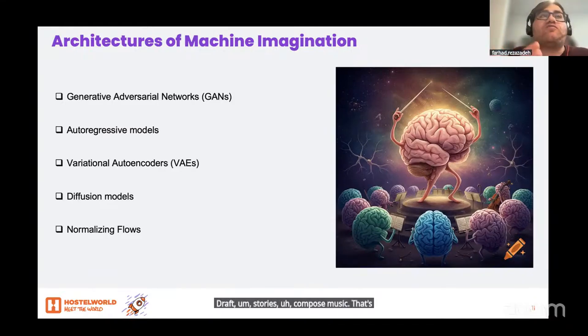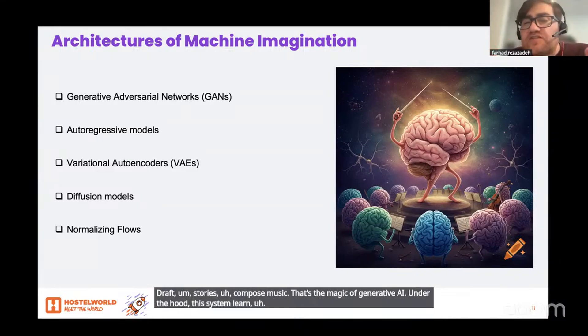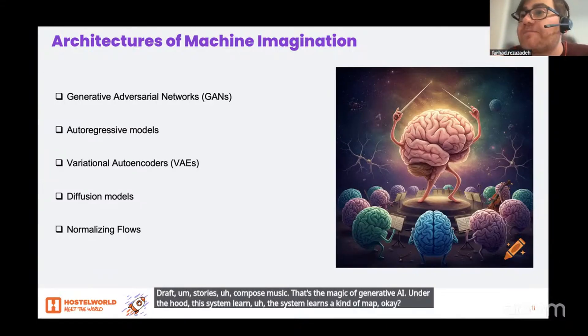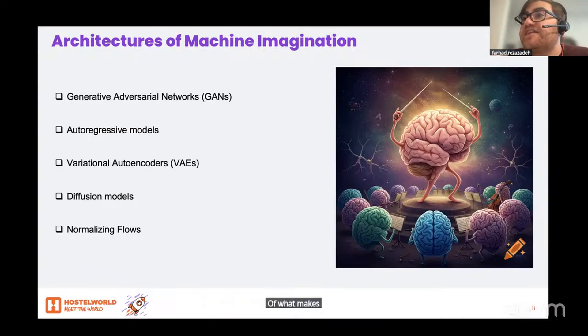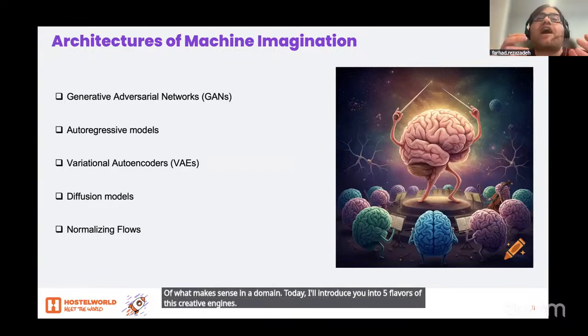That's the magic of generative AI. Under the hood, the system learns a kind of map, a probability map of what makes sense in a domain. Today, I'll introduce you to five flavors of these creative engines, each with its own recipe, strengths and traits.